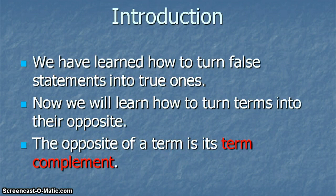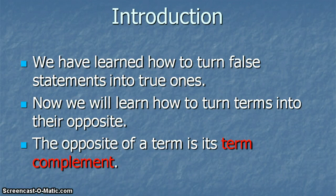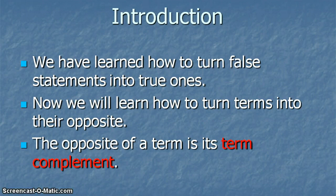Basically, one of the things that we've already learned how to do is turn false statements into true ones, and that we've learned how to do using the square of opposition, particularly the modern square of opposition. So we know that if we have an A statement that's false, we follow the diagonal to get to a true O statement. Or if we have an E statement that's true, we follow the diagonal to get to a false I statement. Now what we need to do is learn how to turn terms into their opposite.